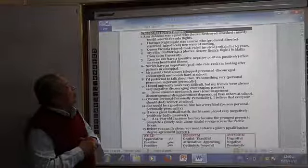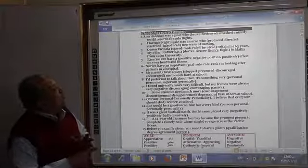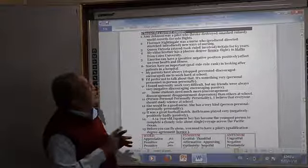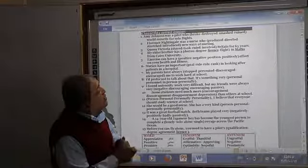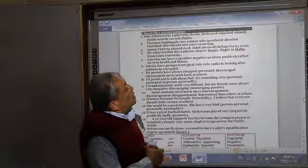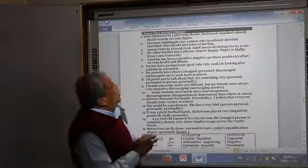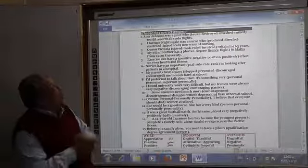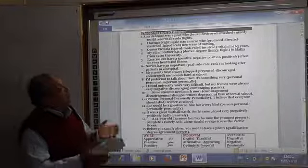Queen Victoria ruled Britain for 63 years. And here we can use Queen Victoria ruled, which is Britain.